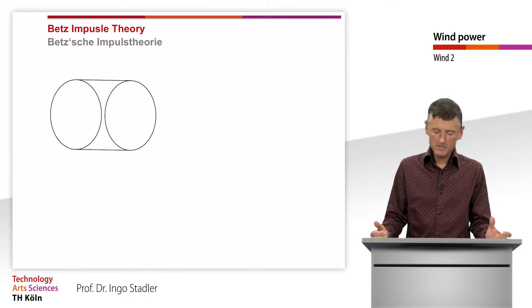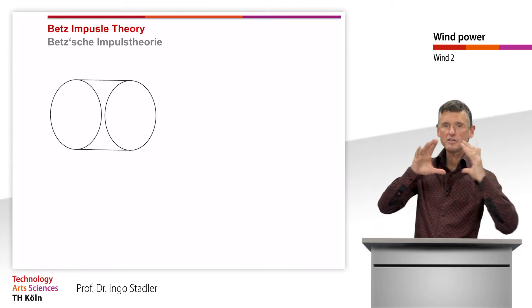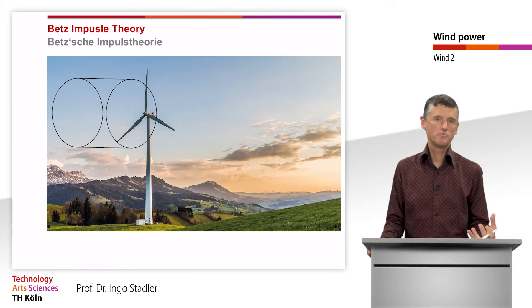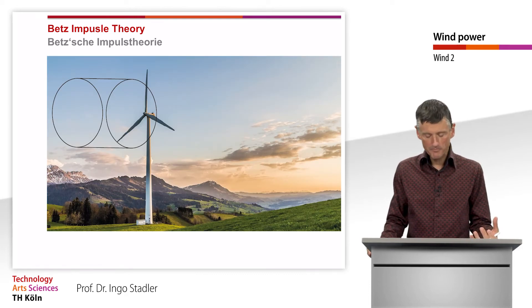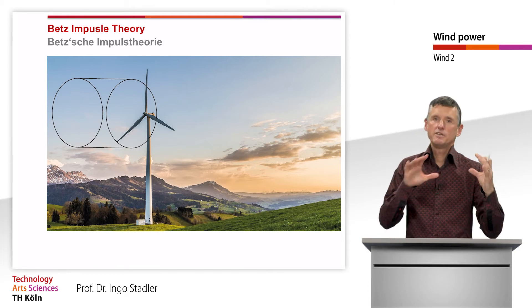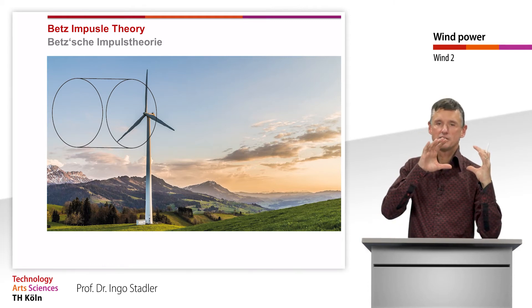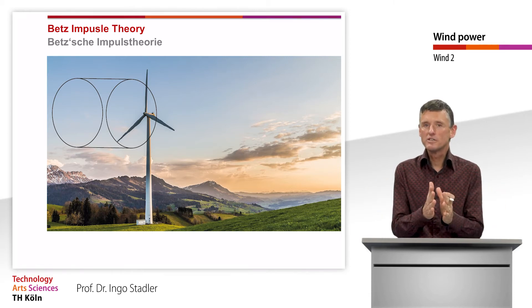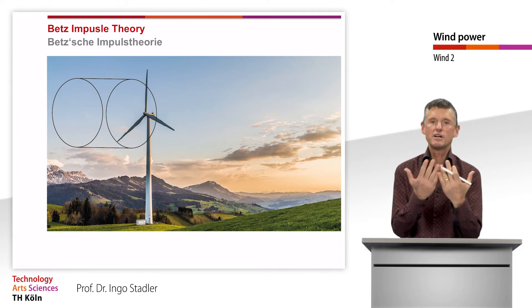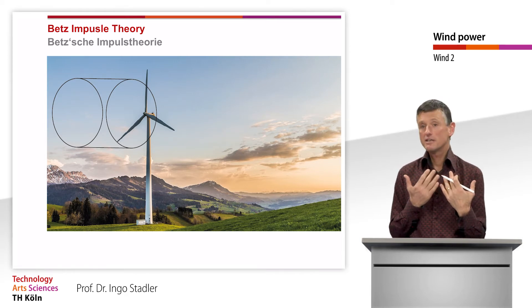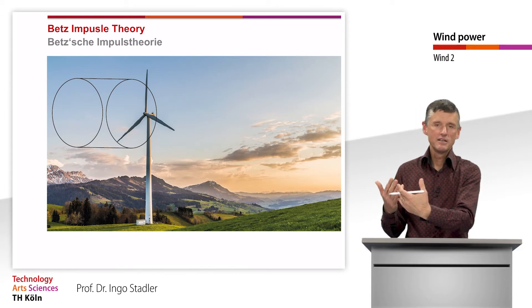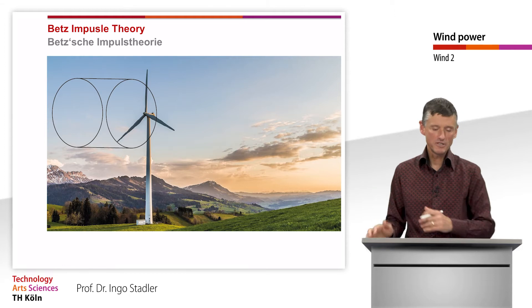We have now the same cylinder of air that is moving around. We are looking at what happens when this cylinder approaches a wind turbine. When the wind turbine is reached, what we are doing is we want to slow down the wind. And when we slow down the wind, we take power out of the wind. Definitely, the wind speed behind the turbine is then at a lower value than before.